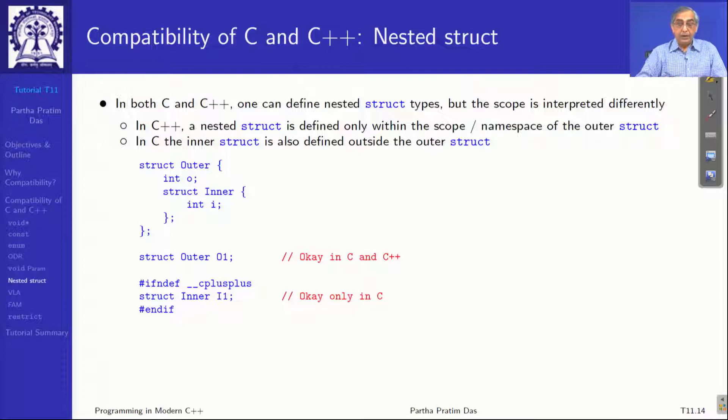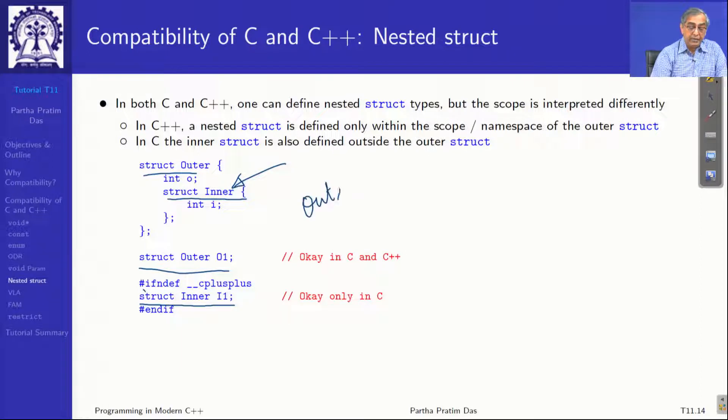Nested structure: you will understand from your discussions on the namespace that I can have a structure outer, and inside that I have a structure inner. In outer, I can refer to inner in C and C++ in the same way. In C, I can refer to inner directly because every name in C is global. But in C++, I cannot refer to inner directly because every struct is a namespace. So the actual name of this inner is not inner, it is outer::inner.